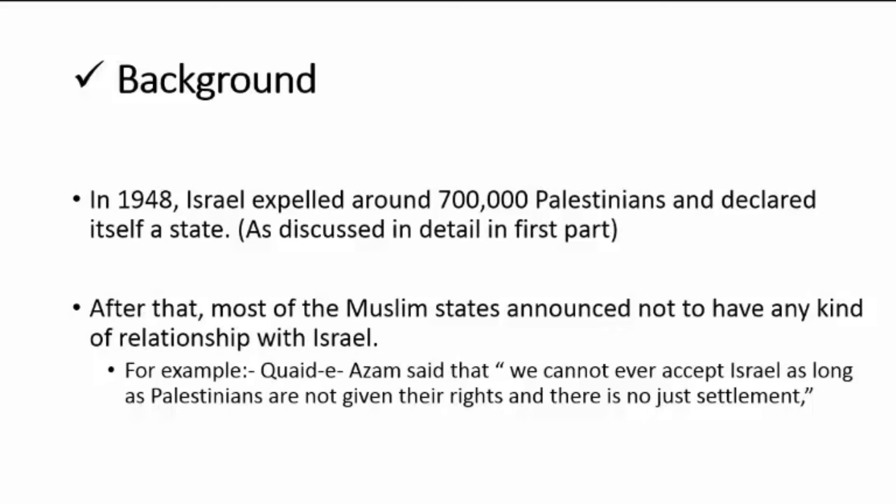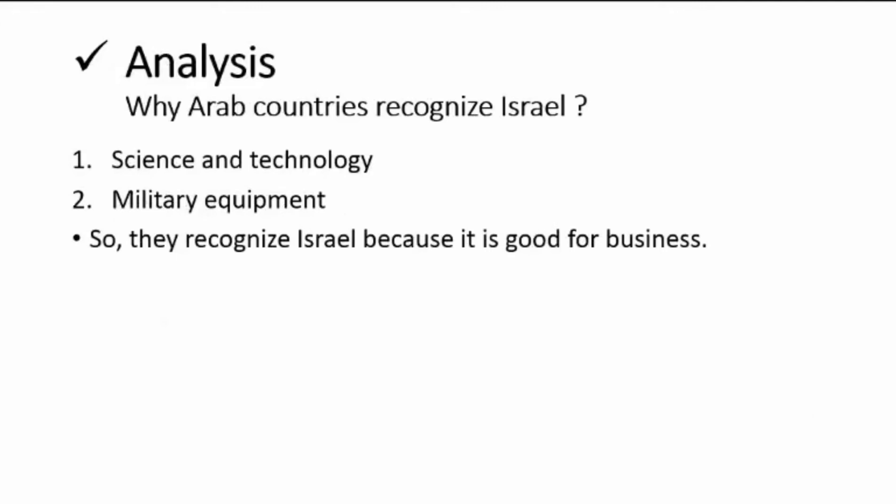The background to why they do not recognize Israel: in 1948, Israel expelled around 700,000 Palestinians and declared itself a state — this was discussed in detail in Part 1. After this incident, most Muslim states announced they would not have any relationship with Israel. For instance, the first Governor General of Pakistan, Quaid-e-Azam Muhammad Ali Jinnah, said we cannot ever accept Israel as long as Palestinians are not given their rights and there is no just settlement. Leaders of other Muslim countries made similar announcements.